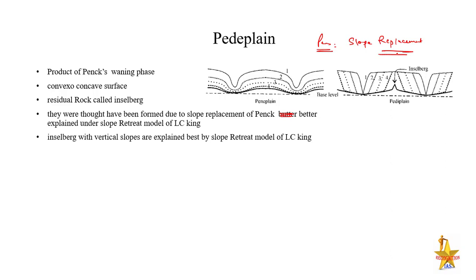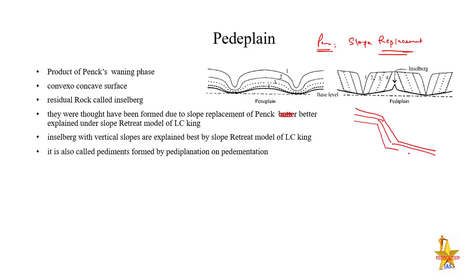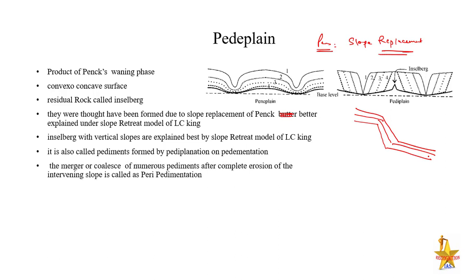Inselbergs with vertical slopes are best explained by L.C. King's retreat model, where parallel retreat of slopes takes place. This was initially misinterpreted due to translation problems from Penck's original work. It is also called a pediplain formed by pediplination and pedimentation. When numerous pediments merge after complete erosion of the intervening slope, that process is called pedimentation.